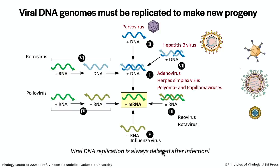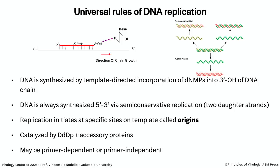Replication is delayed because you need at least one protein — sometimes many — to get viral DNA synthesis going. Today we're going to see that one or more protein being made. Just like for RNA synthesis, there are universal rules for DNA replication.